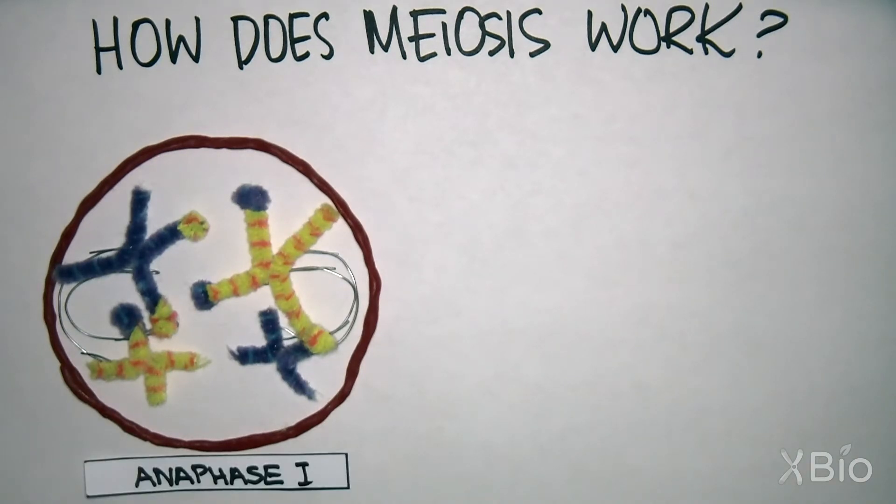This is the second step where diversity is introduced, as it is random whether the mother or the father pair of chromatids goes to one end of the cell or the other.